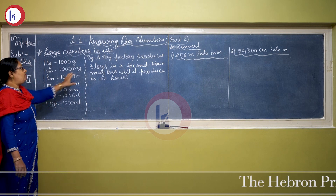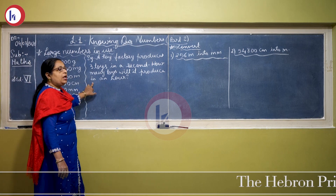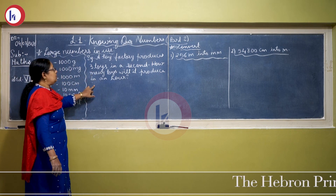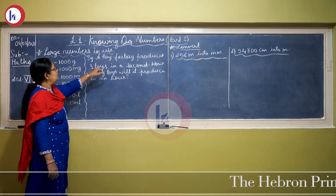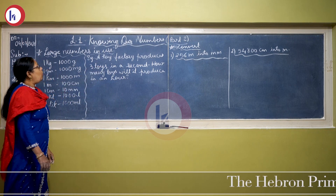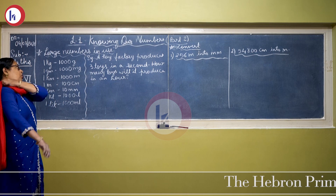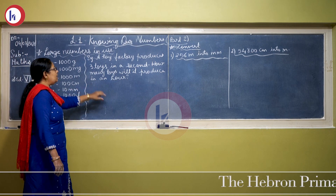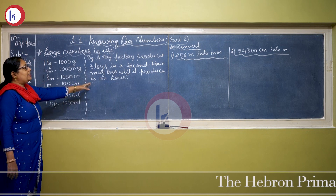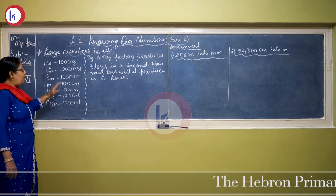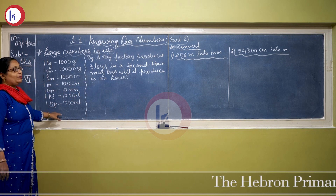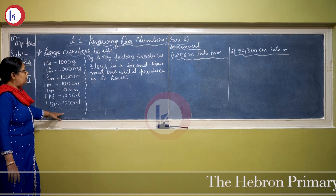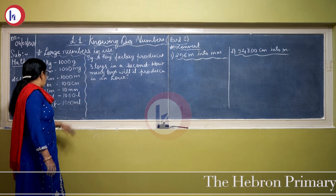Now based on these measurements, here I have given you one word problem and I will help you to solve it. Now here it is given: a toy factory produces three toys in a second. Now how many toys will it produce in an hour? This is based on time. So apart from these measurements, time and rupees and paise also come into measurement.